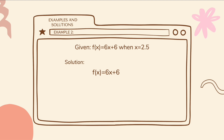For the second example, we have the given f of x is equal to 6x plus 6, when x is equal to 2.5. Just like the first example, we are going to replace all x values with the given, which is 2.5. So it becomes f of 2.5 is equal to 6 times 2.5 plus 6.